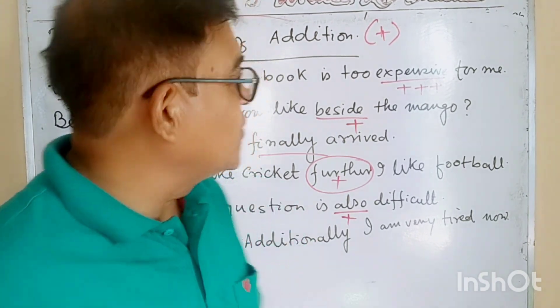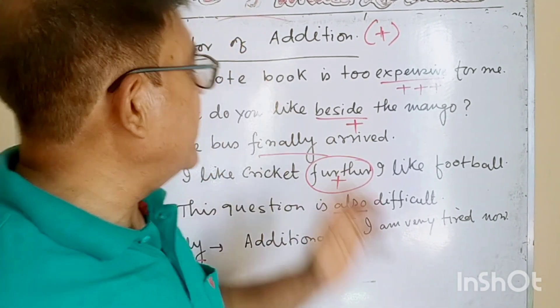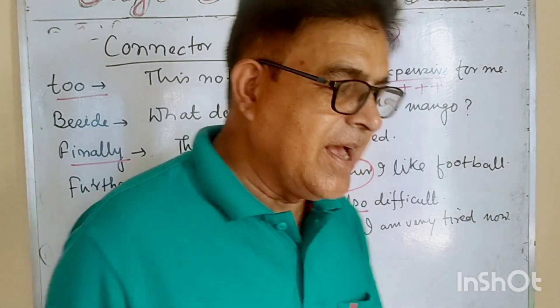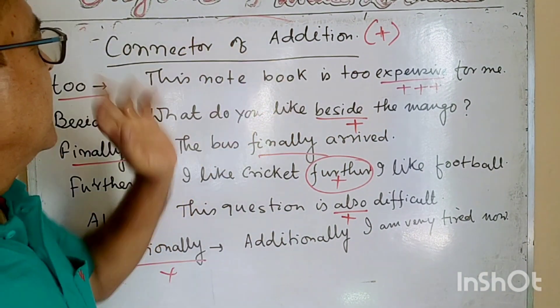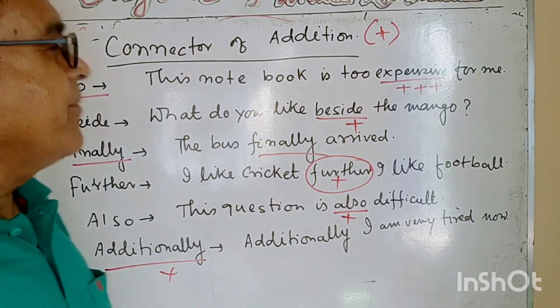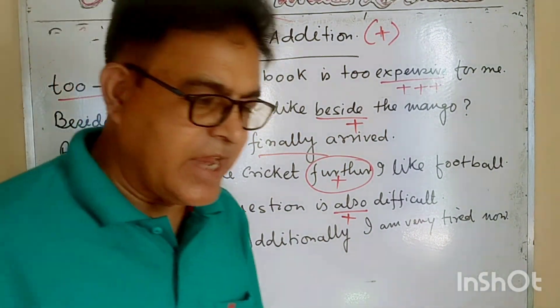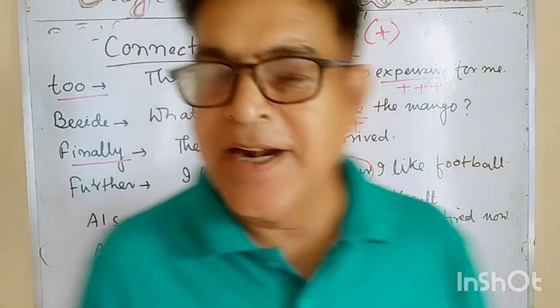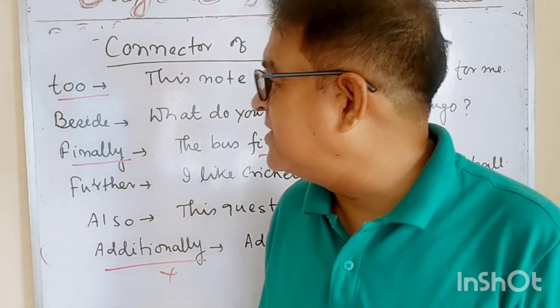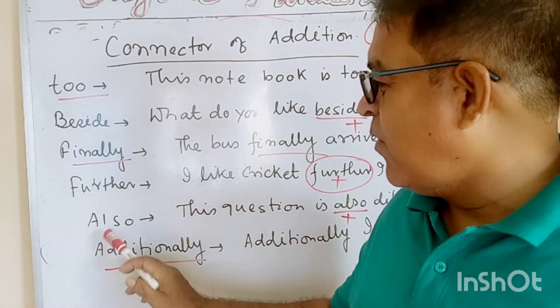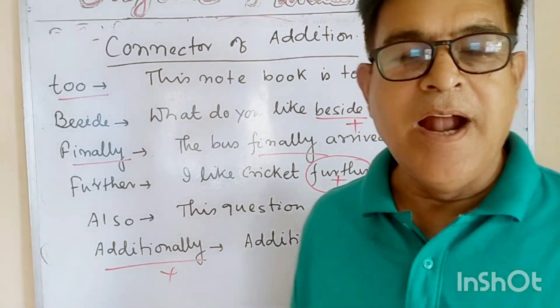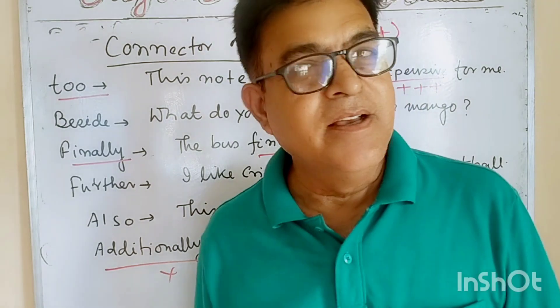So this is the way how to use connectors of addition. The connectors of addition we discussed are: 'too,' 'besides,' 'in addition,' 'finally,' 'further,' 'also,' and 'additionally.'